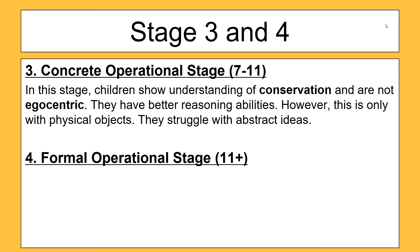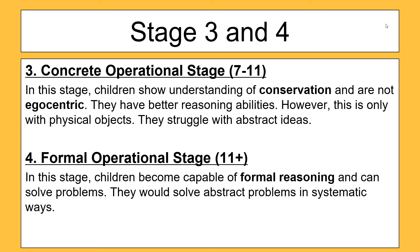Moving on to the fourth and final stage, the formal operational stage. Piaget said this is for people who are 11 and older. Simply at this point, children become quite capable of formal reasoning — they can start to think in abstract, hypothetical ways, and they can solve abstract problems in systematic styles.